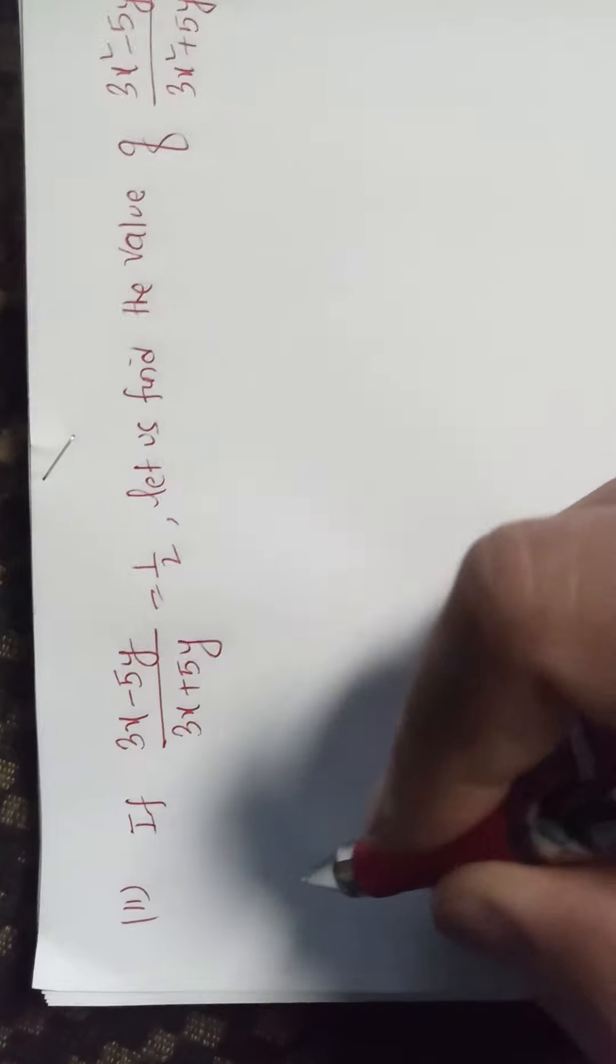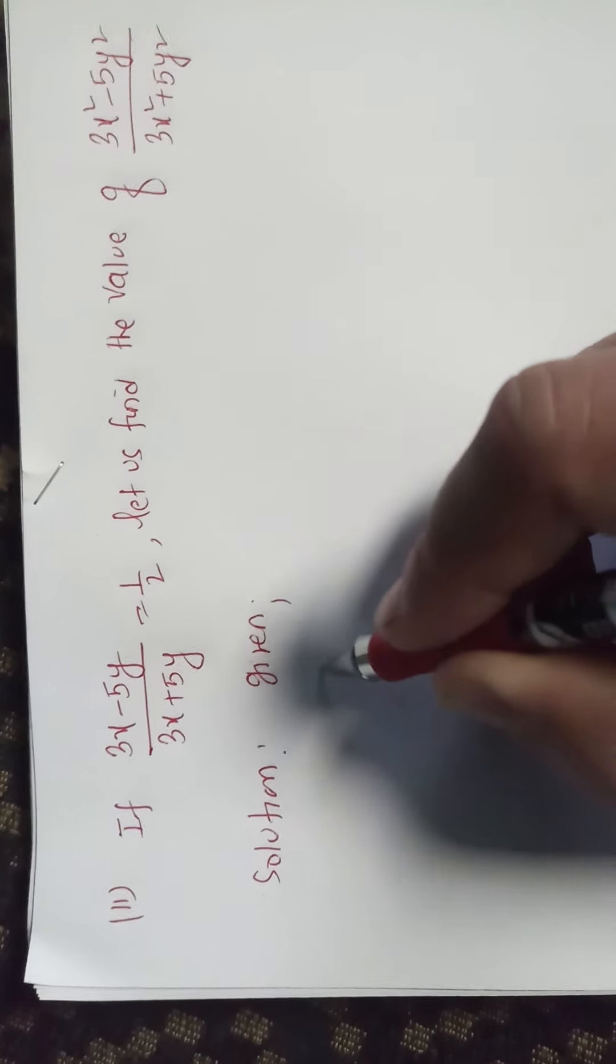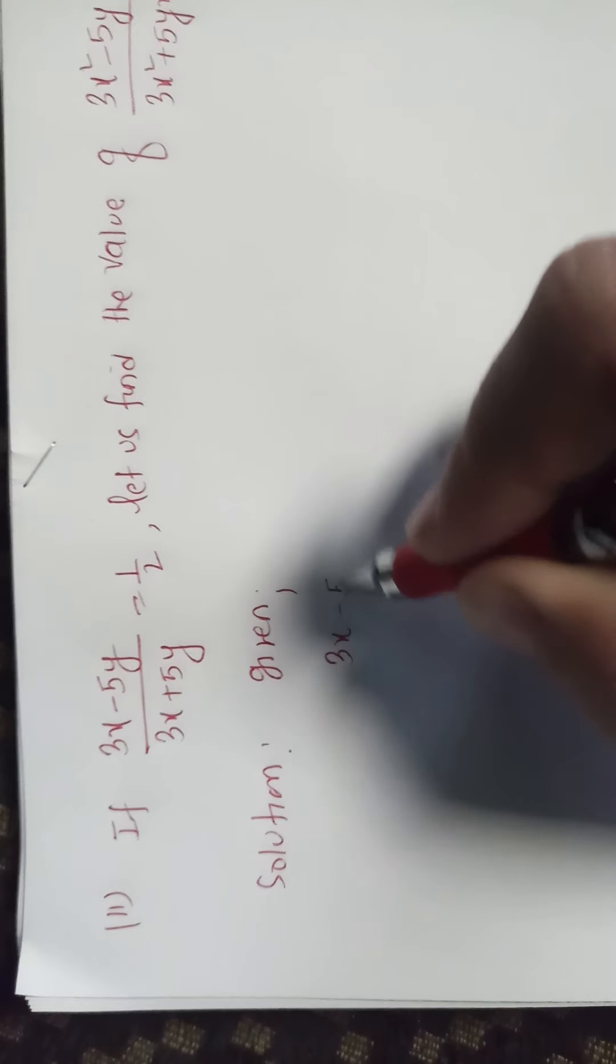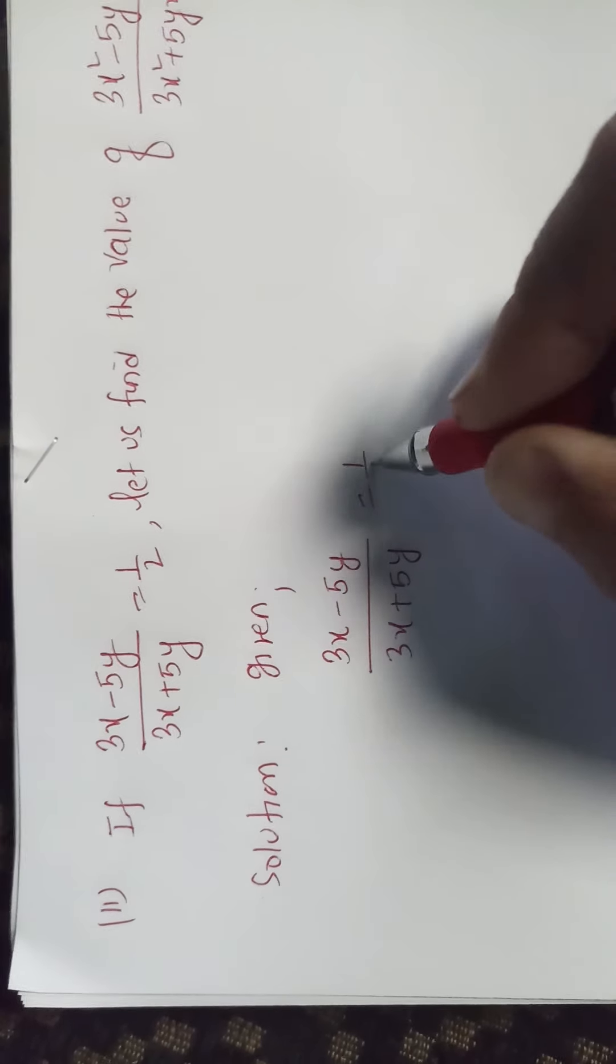So solution. I have given 3x minus 5y by 3x plus 5y equals to 1 by 2.